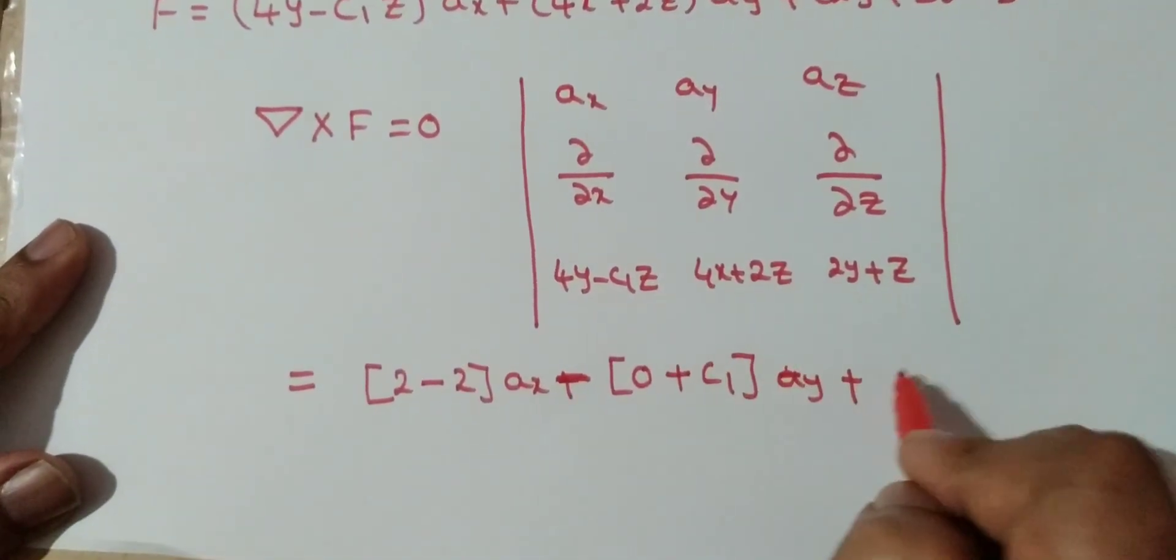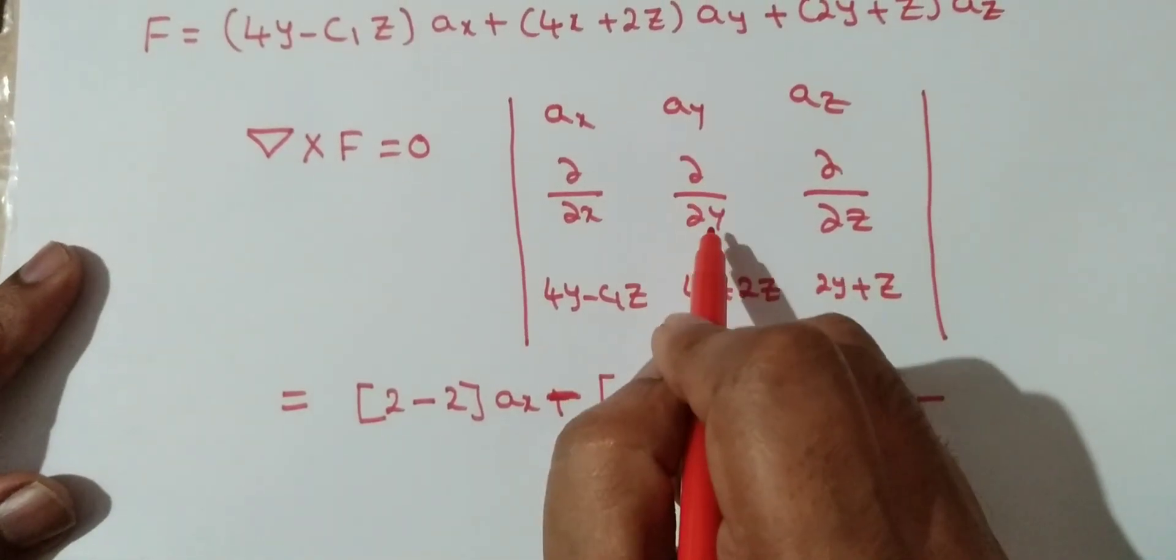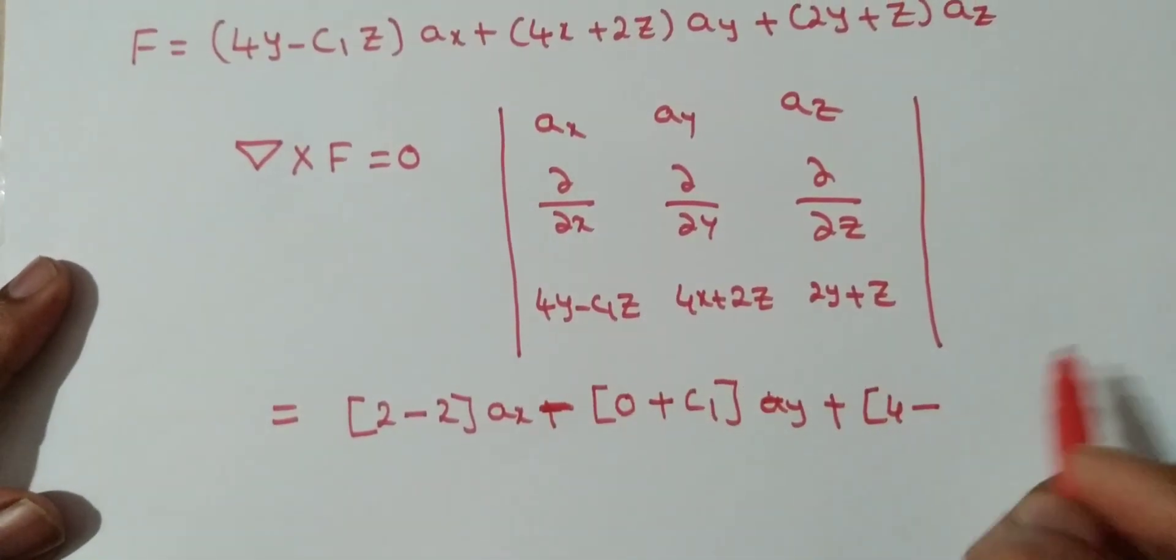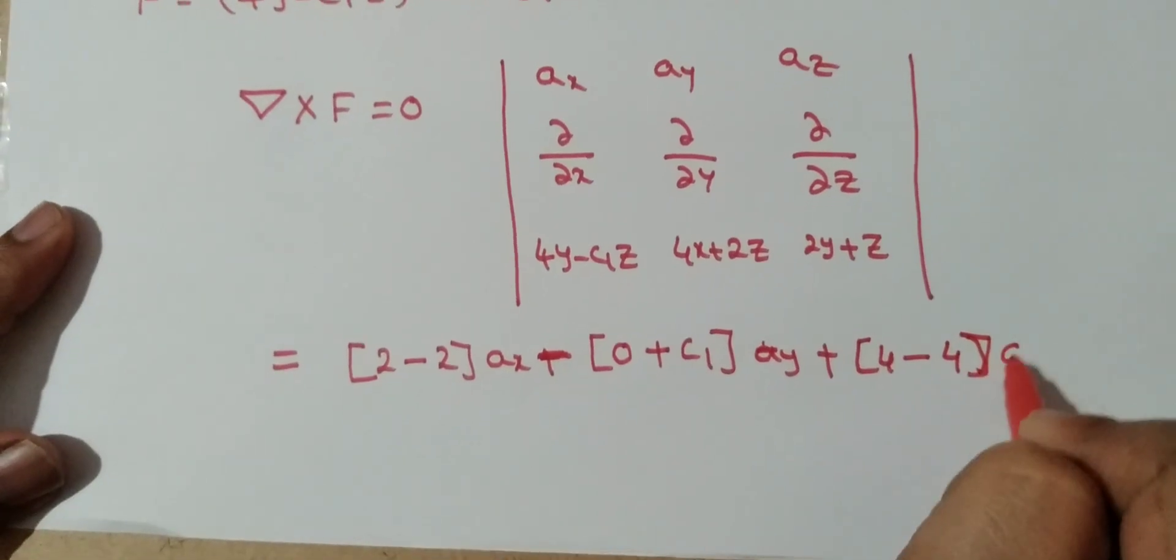∂/∂x of (4x + 2z) equals 4, minus ∂/∂y of (4y - c1·z) equals 4, giving [4 - 4]az.